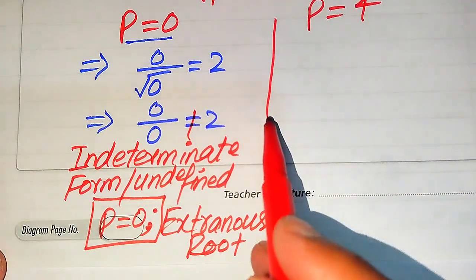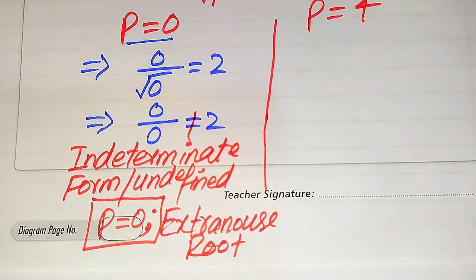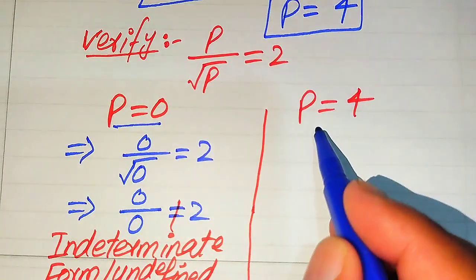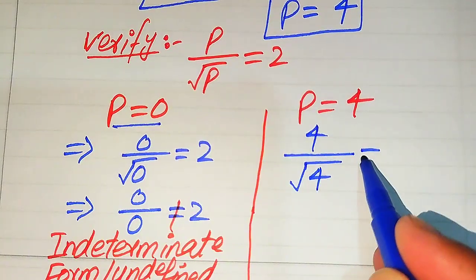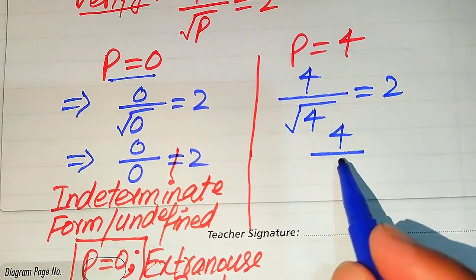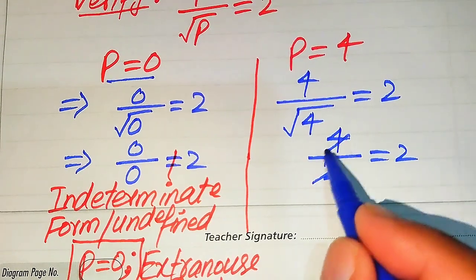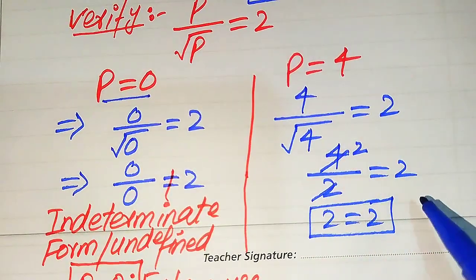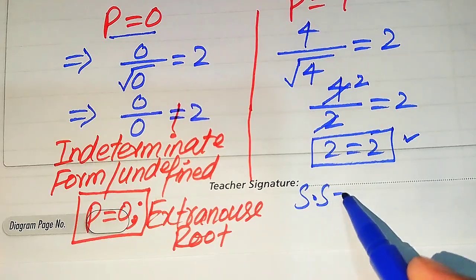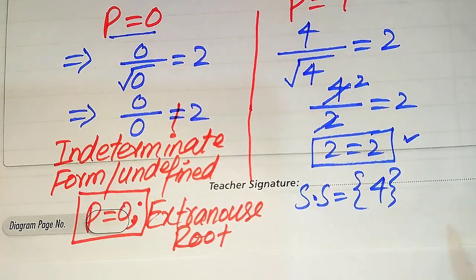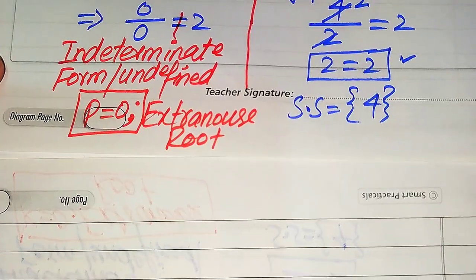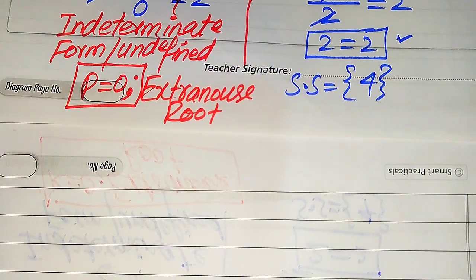Now we verify the second root. We put p equals 4 into the left hand side: it becomes 4 divided by square root of 4 equals 2. Square root of 4 is 2, so we get 4 divided by 2 equals 2, which gives 2 equals 2. This shows p equals 4 satisfies the equation, so p equals 4 is the solution. Thus one root is extraneous and one is the solution set.